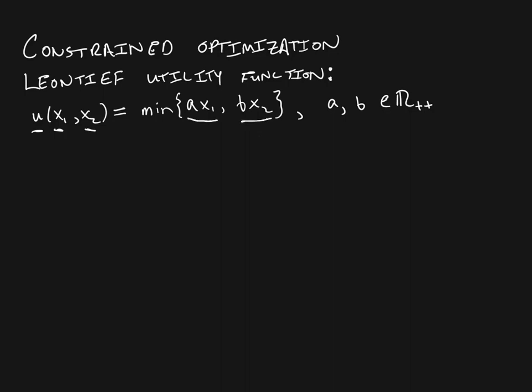If you're trying to figure out what the optimal consumption bundle is — how much the consumer should buy of each good — they don't want to spend any more than they have to in order to get a given level of utility. So it makes the most sense for the consumer to set AX1 equal to BX2, because if one is larger than the other, you've bought too much of that good and could cut back and increase utility. So optimally, AX1 equals BX2.